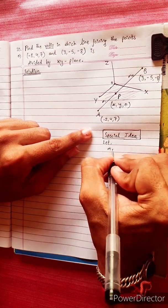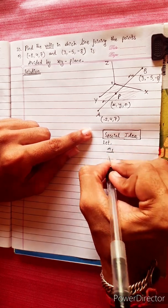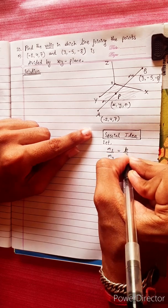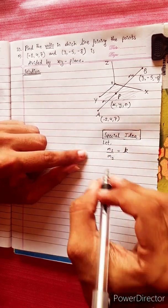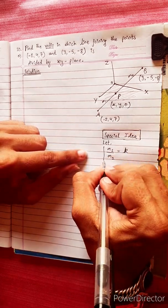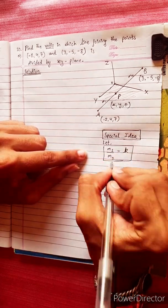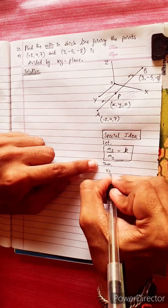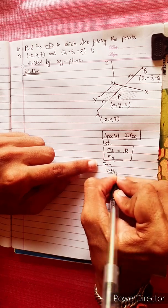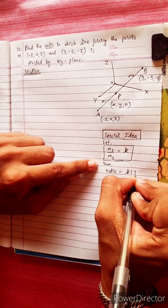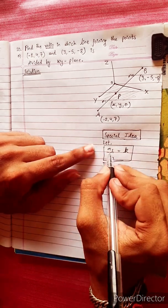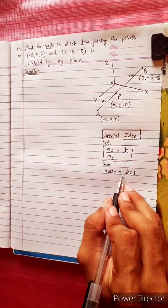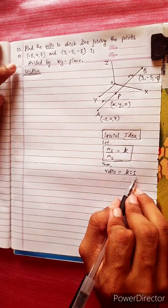Let m1 by m2 equals to k. This is a special idea. Then the ratio equals k is to 1 — meaning k:1, where k equals m1 by m2, is to 1.